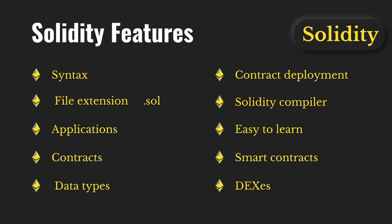The fifth point is data types. Every programming language has its own data types — arrays, booleans, numbers — and Solidity does too. Solidity has uint (unsigned integer), int (signed integer), boolean, fixed arrays, dynamic arrays, enums, and structs. The sixth point is contract deployment: whatever contract you write in Solidity, you can deploy it on the Ethereum blockchain or Polygon blockchain, since all of these blockchains accept smart contracts and follow the EVM protocol.